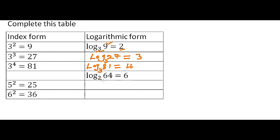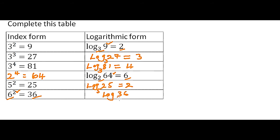Here, we have been given the logarithmic form and therefore we are supposed to write the index form. Note that 2 to power 6 equals 64. The logarithm of 25 to base 5 equals 2. And finally, the logarithm of 36 to base 6 equals 2. So we write logarithm of 36 to base 6 equals 2. That is how we convert from index form to logarithmic form and from logarithmic form to index form. I hope you have followed how we have done that, because we are going to do more on that.